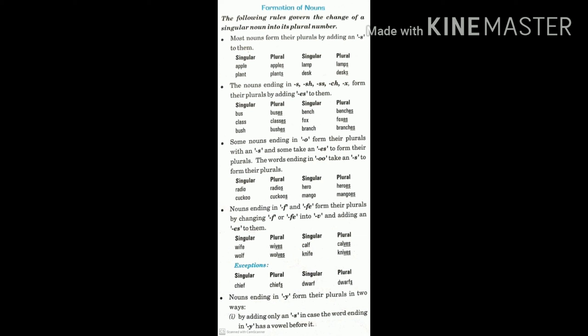Here are some rules on your screen that show how we can make a singular noun into its plural number. The first is most nouns form their plural by adding s to them. That we all know. Like apple, apples, plant, plants.